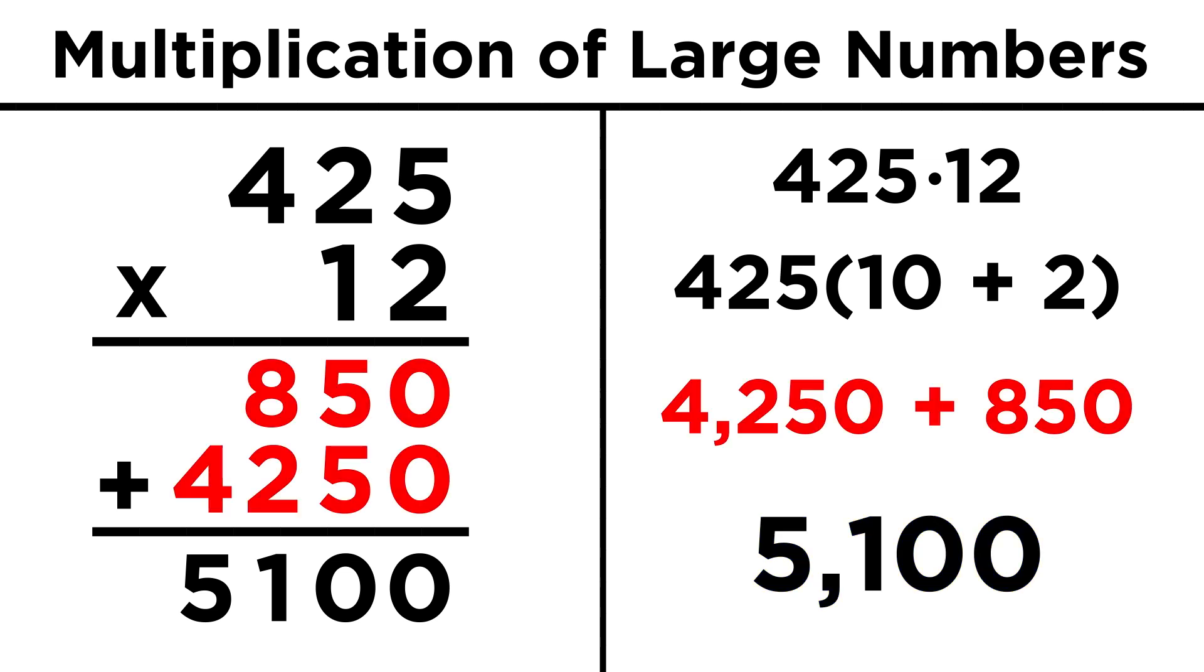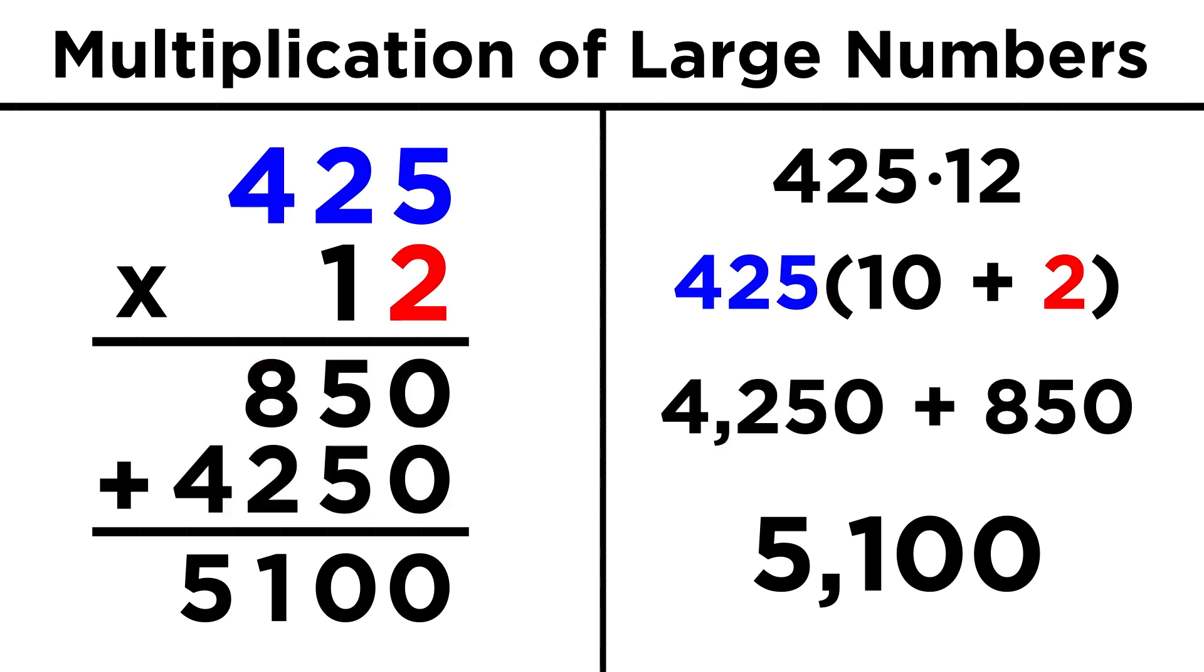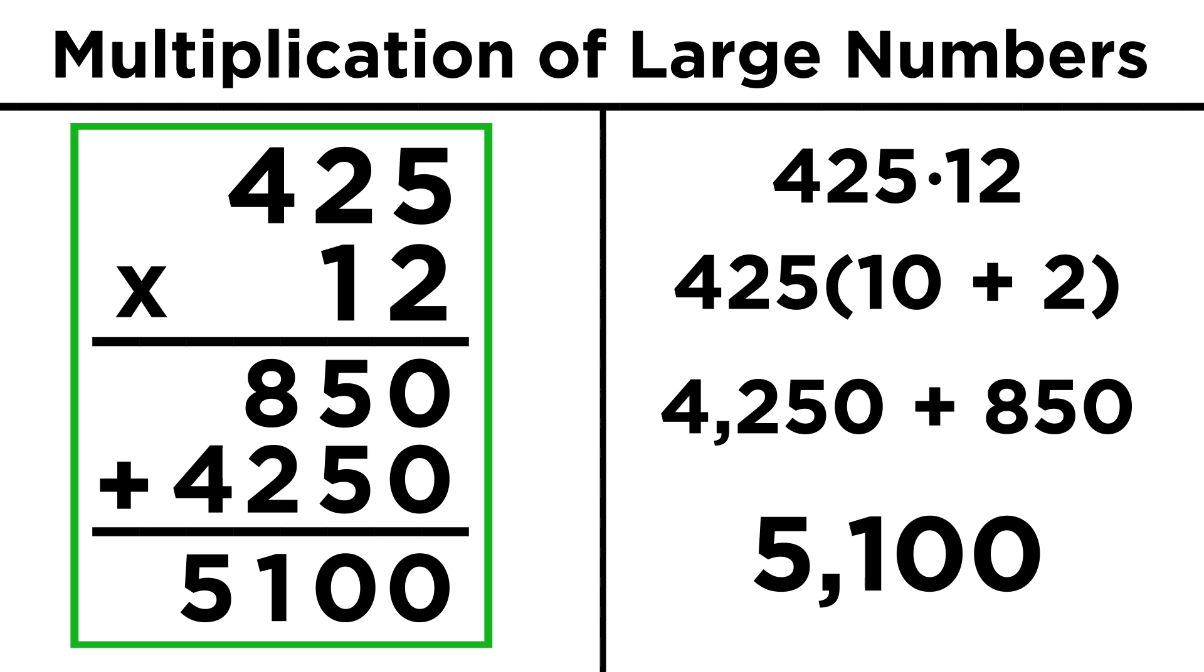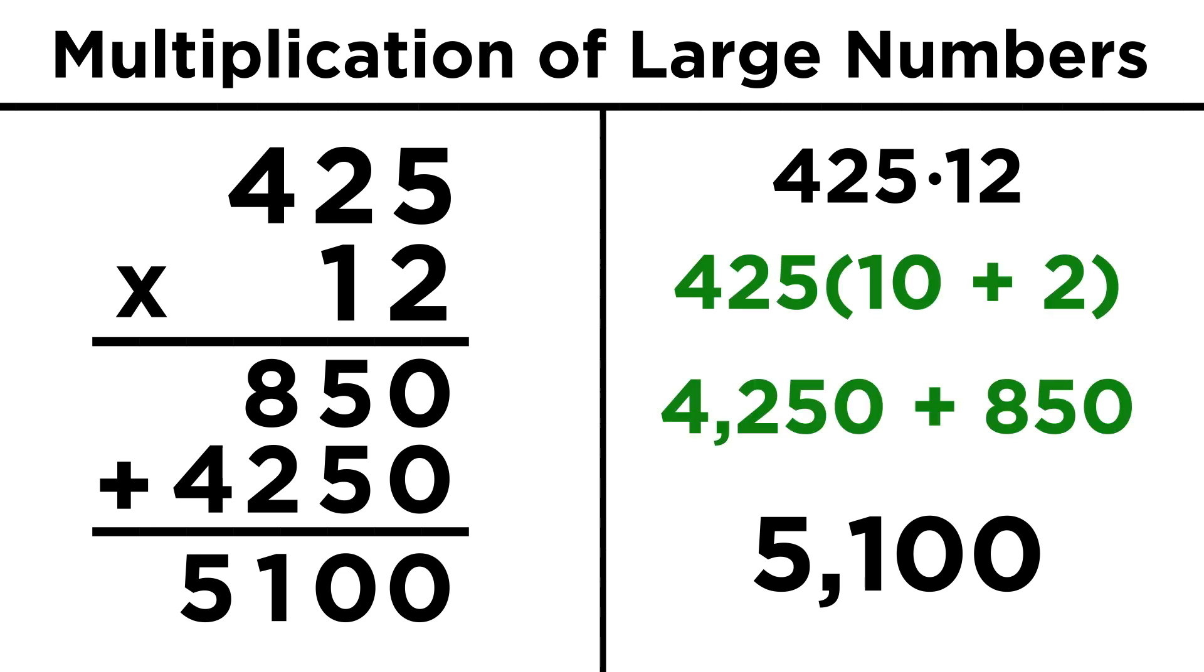Let's take a moment to notice that these numbers are the same as the ones we added together when using the other approach. That's because they are essentially the same approach. When we multiply through the units place, we are multiplying by two. When we multiply through the tens place, we are multiplying by ten. But, while the first method requires many small computations, the second method requires comparatively fewer.